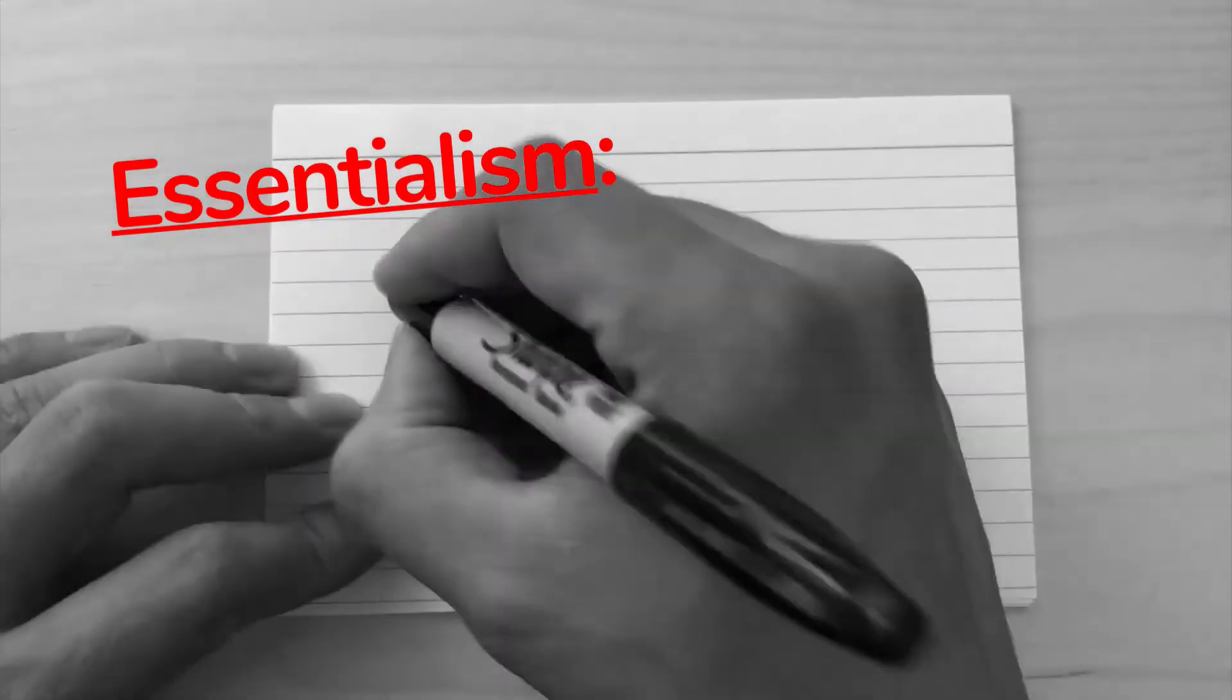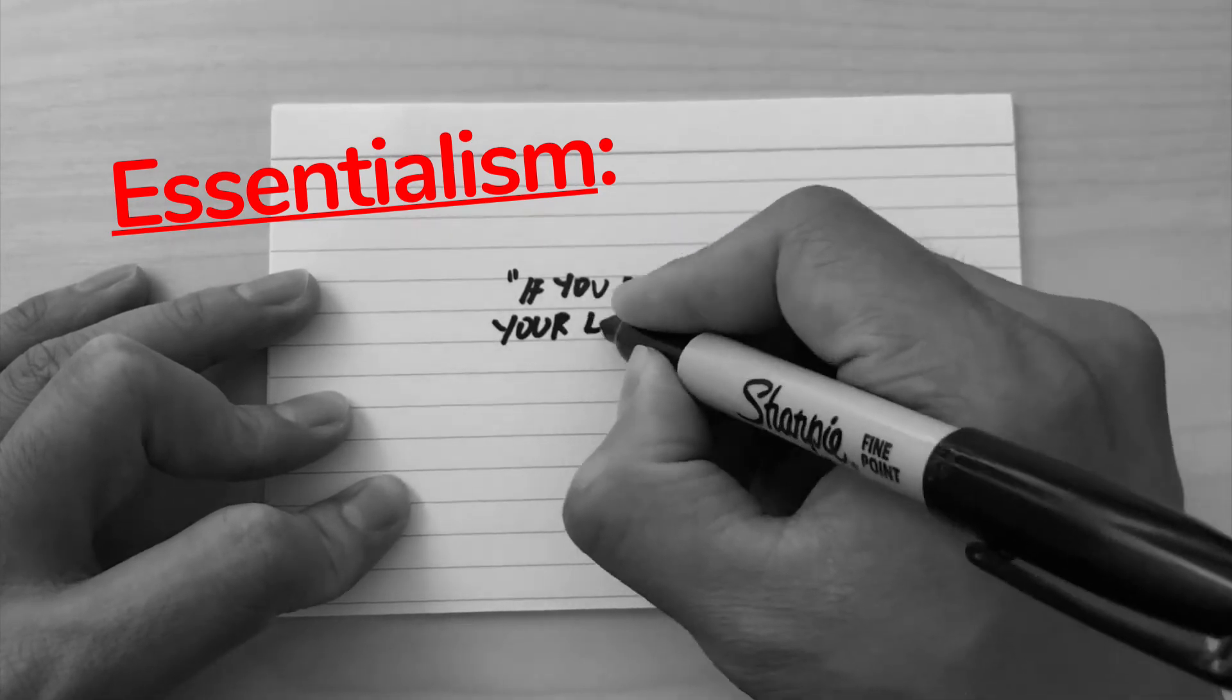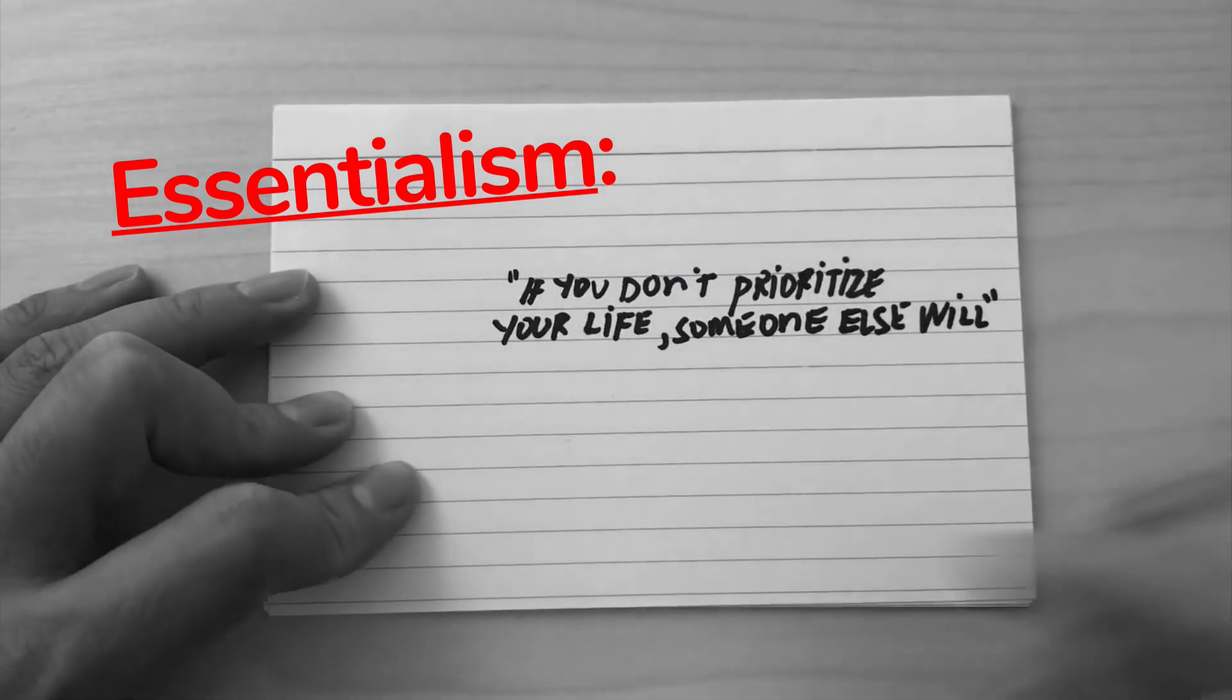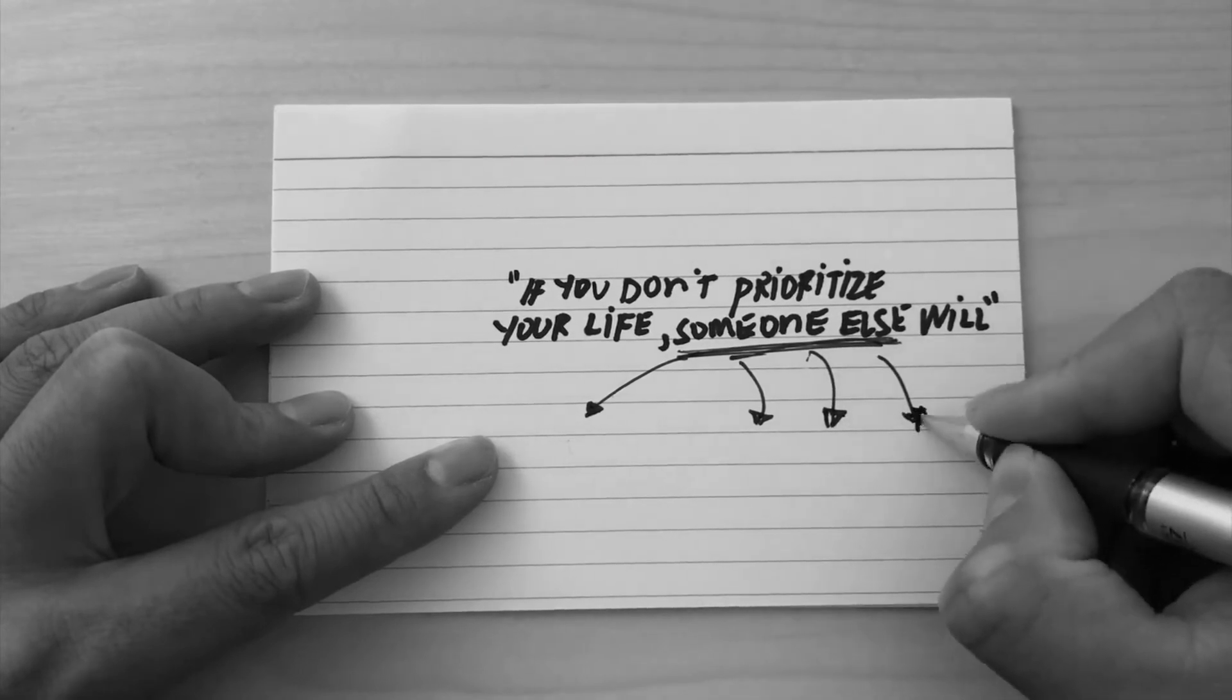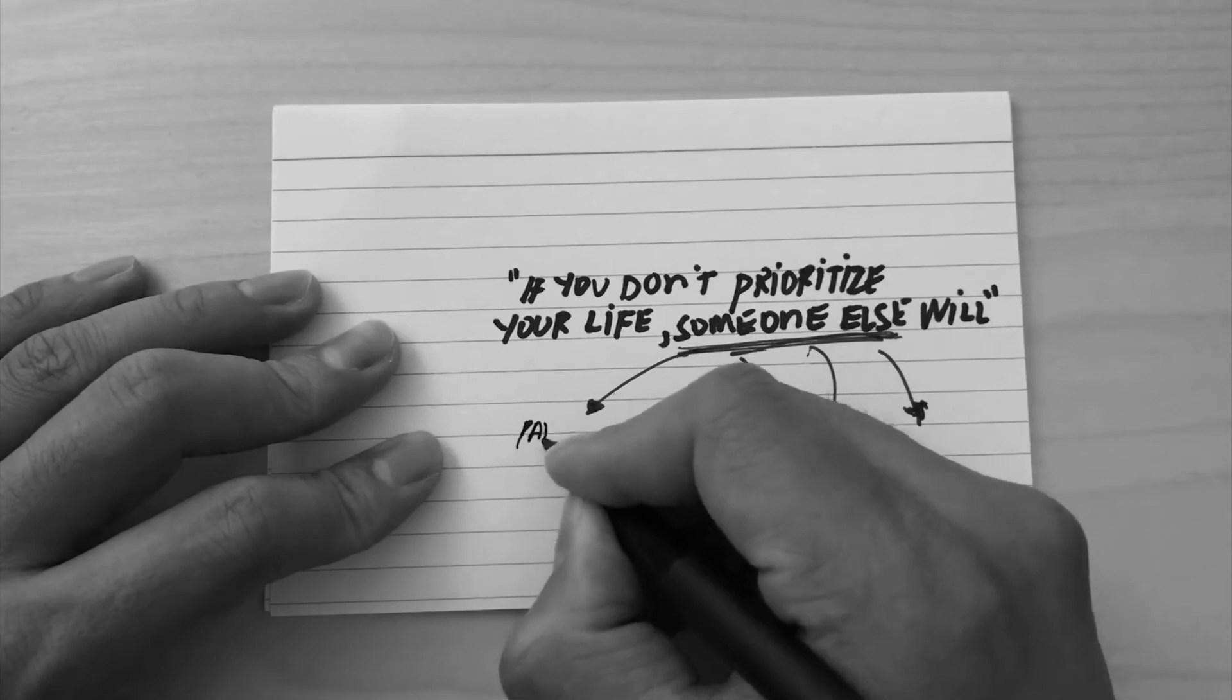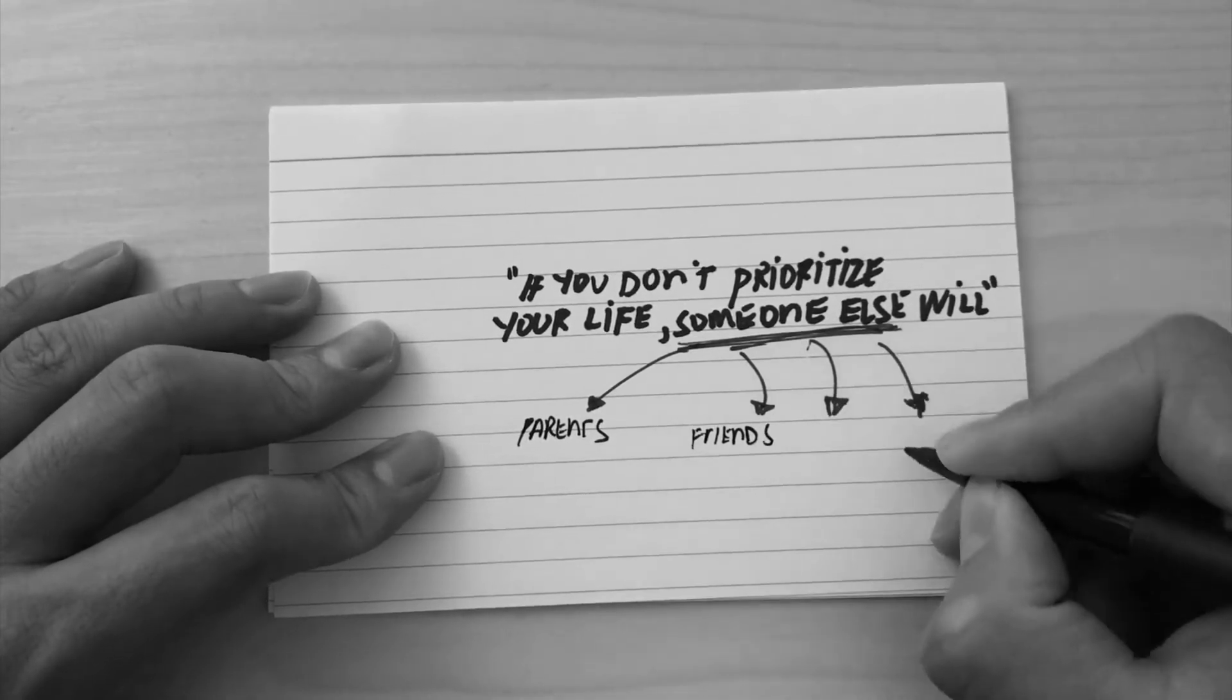If you think about it, who is that someone else? Think about your priorities right now. You might have gotten them from how you were raised, what your parents believed, what you were taught in school, who your friends are, your upbringing, and your current environment. That's not to say that these are all bad beliefs and bad priorities.